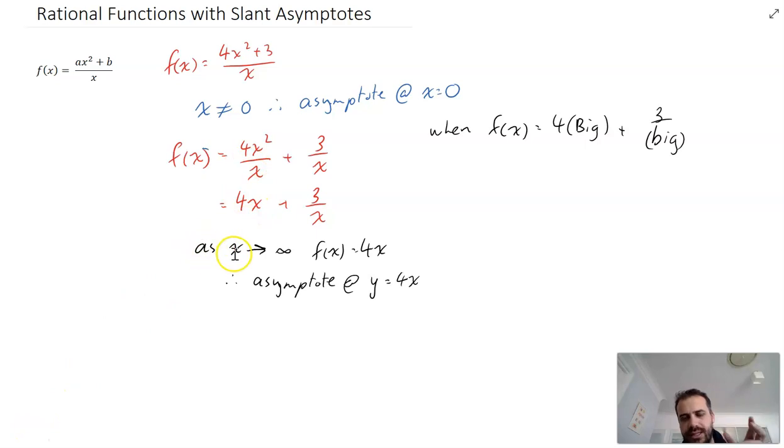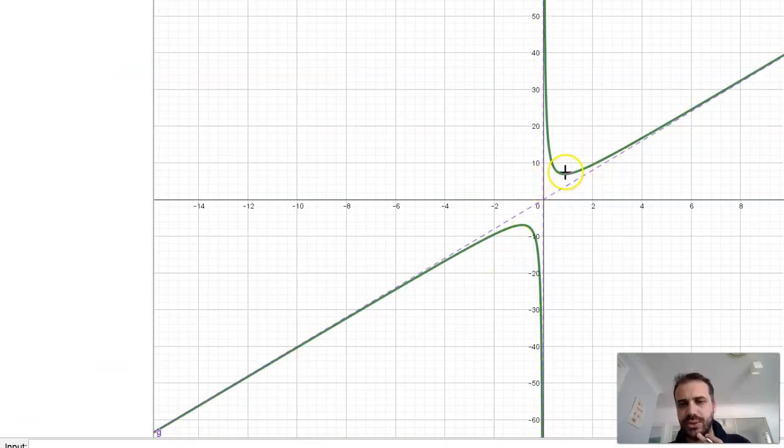And that 4x there is going to be our asymptote. As x approaches infinity, f of x equals 4x, therefore the asymptote at y equals 4x. So we have pretty much all the pieces of the puzzle now. We have an asymptote x equals 0. We have an asymptote y equals 4x. We just need to know what those turning points are. So we can see there are two of those turning points. We're going to do two equations to find them.